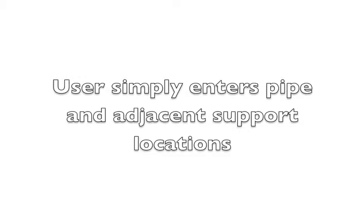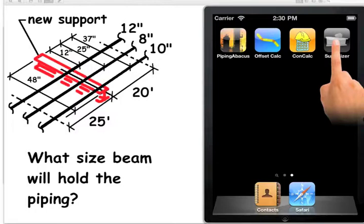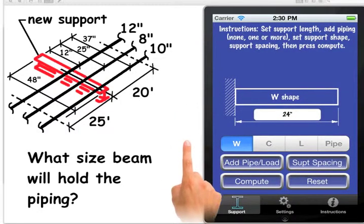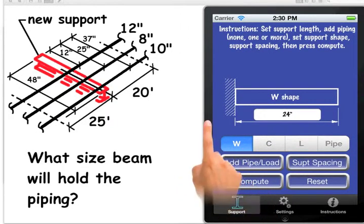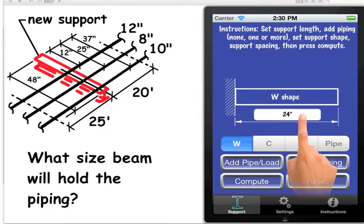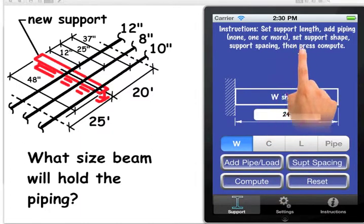Upon loading the app, the user is presented with a cantilever pipe support. The user then sets parameters such as support overall length, support member shape, the distance to the next adjacent support, and the piping which rests on the support.